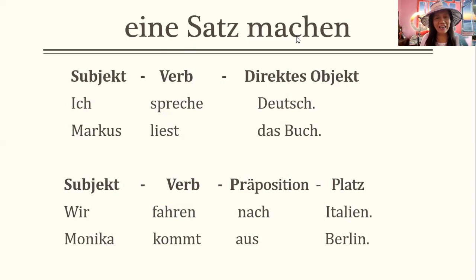What if you have a preposition? The pattern becomes: subject, verb, preposition, place. Zum Beispiel: wir fahren nach Italien — we travel to Italy. Monica kommt aus Berlin — Monica comes from Berlin.